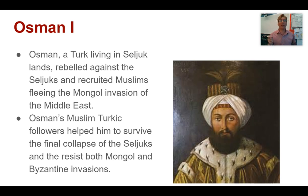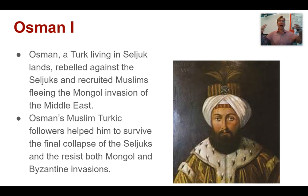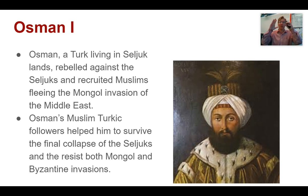To rebel against them successfully, Osman recruits a lot of Muslims who are fleeing from the Mongol invasions of the Middle East. The Mongols of Asia are pushing into the Middle East, a lot of people are fleeing, and Osman is saying, come to me, I'll take care of you, I'll protect you — all I need you to do is serve with me and help us establish a new homeland. Osman's Muslim Turkic followers helped him survive the final collapse of the Seljuks. As the Seljuks declined and fell to the Mongols, this Ottoman group held firm, resisting the Mongols and keeping them from taking over their territory.